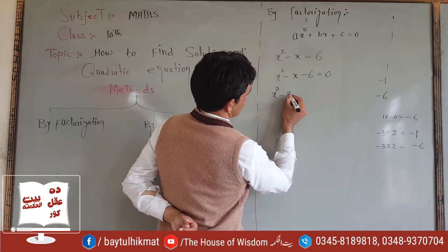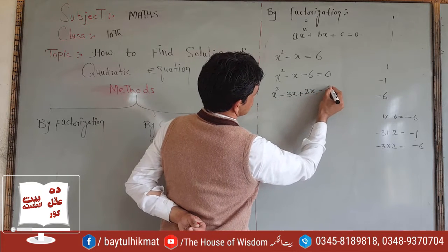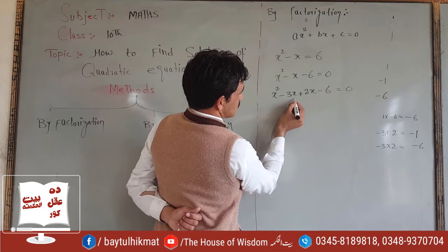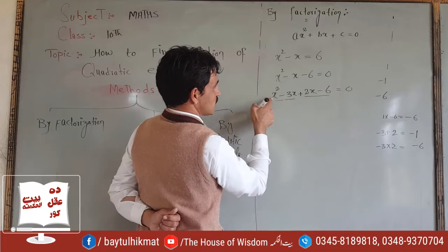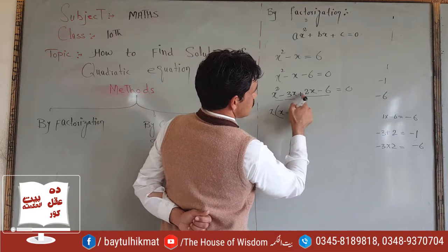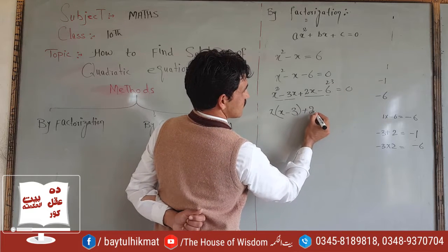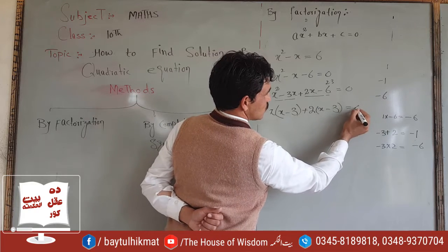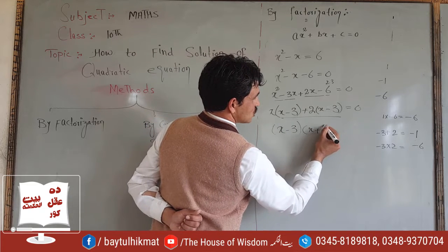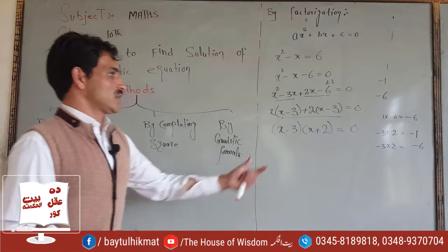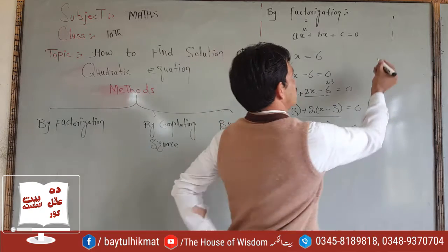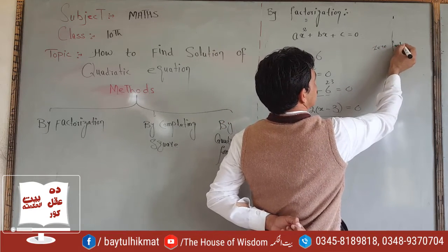So x squared minus 3x plus 2x minus 6 equals zero. We factor: x(x minus 3) plus 2(x minus 3) equals zero, which gives (x minus 3)(x plus 2) equals zero. Now we apply the zero product property.